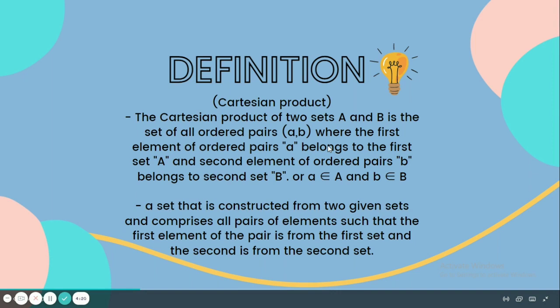Another definition of Cartesian Product that can help us understand it more is that it is a set that is constructed from two given sets and comprises all pairs of elements such that the first element of the pair is from the first set and the second is from the second set.